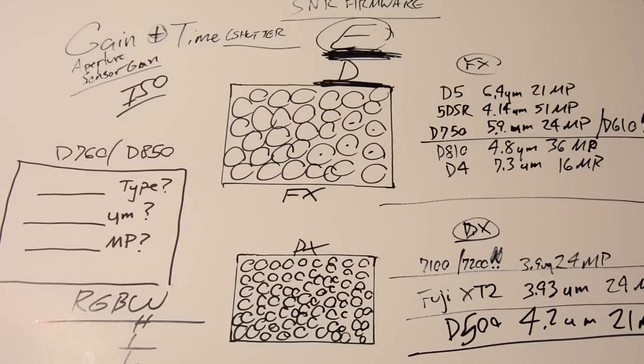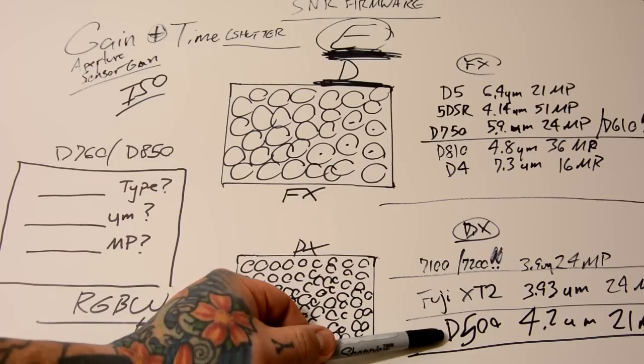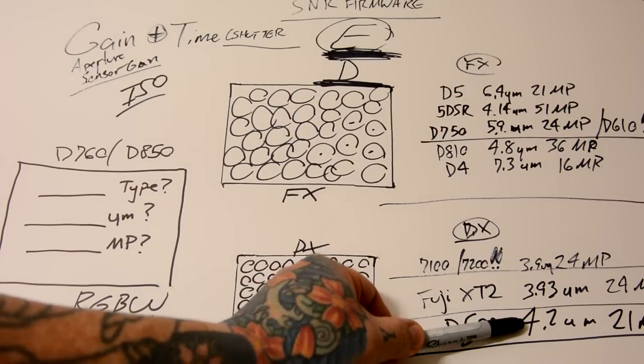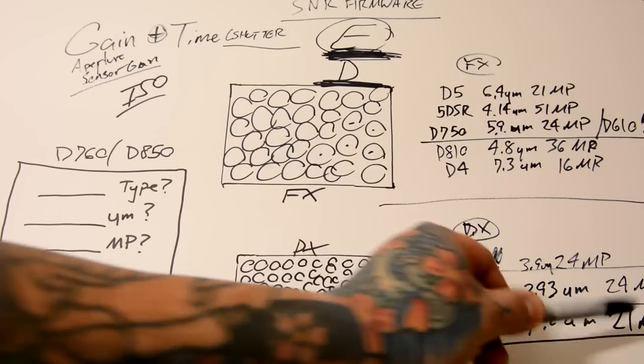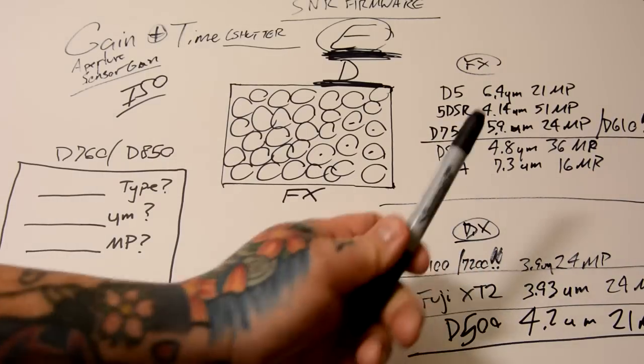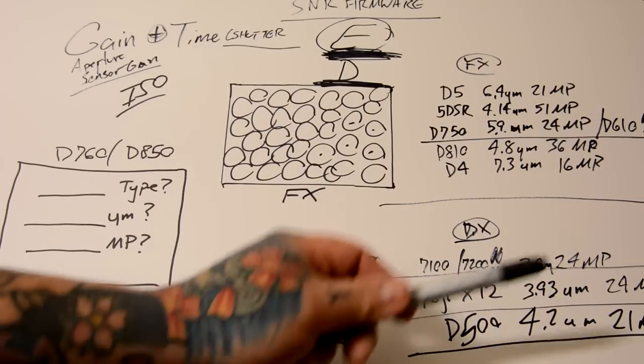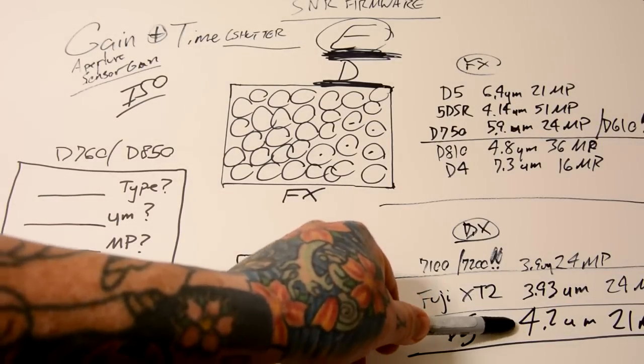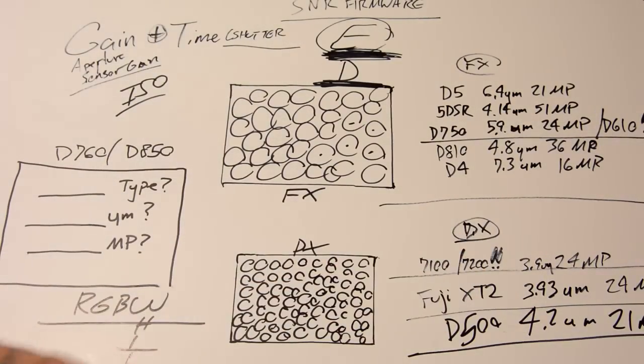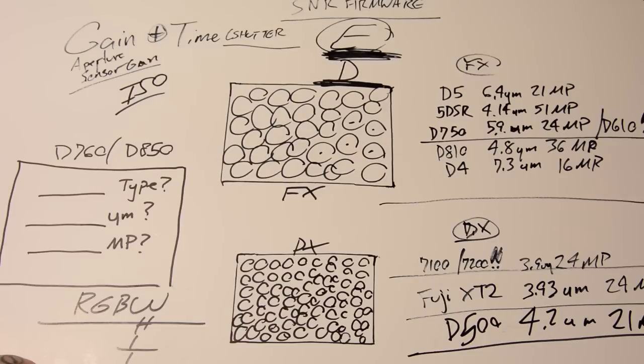Now, we can't have it be a 40-megapixel sensor. We can just scale up the Nikon D500, which is a 4.2 micrometer. It has an amazing efficiency. It's a 21-megapixel camera, 20.9, basically 21-megapixels. If this were scaled up the exact same pixel pitch, it would basically be a 42-megapixel sensor. So, let's say about 40-megapixels, right?